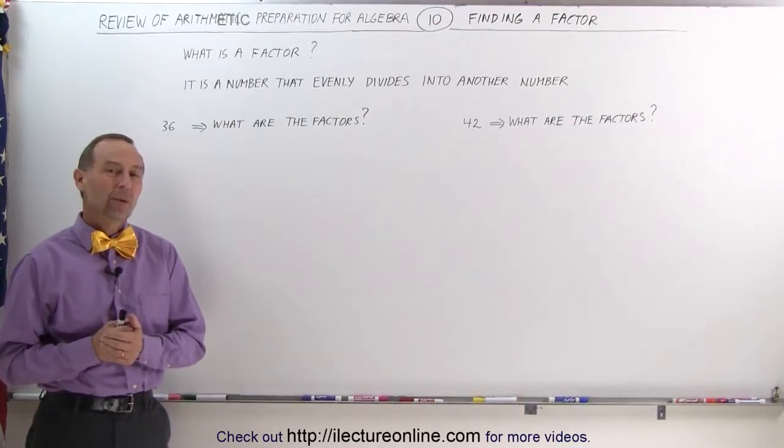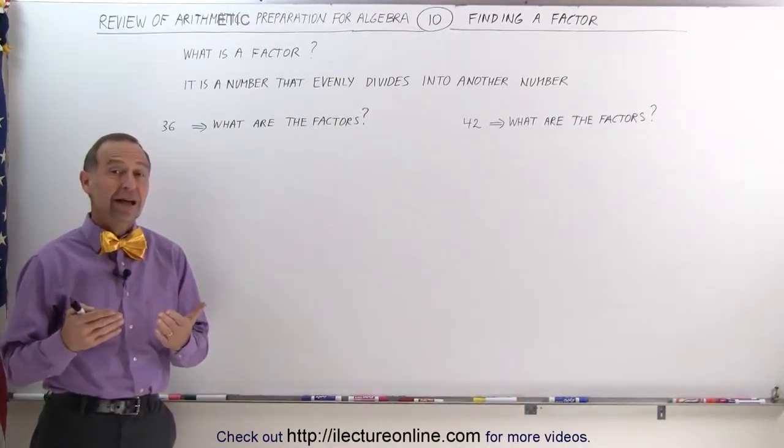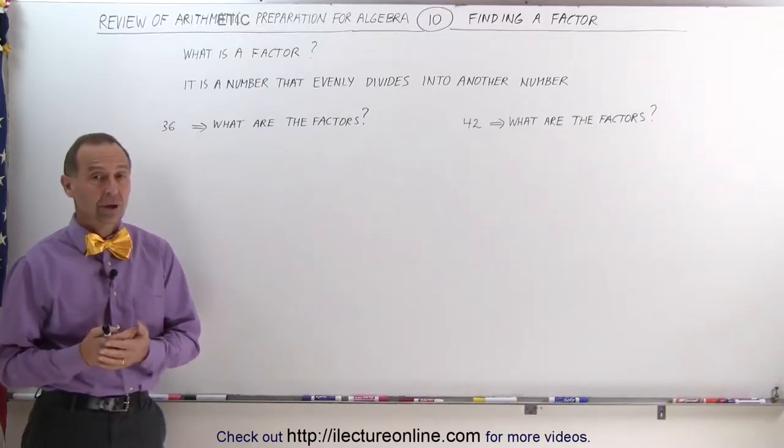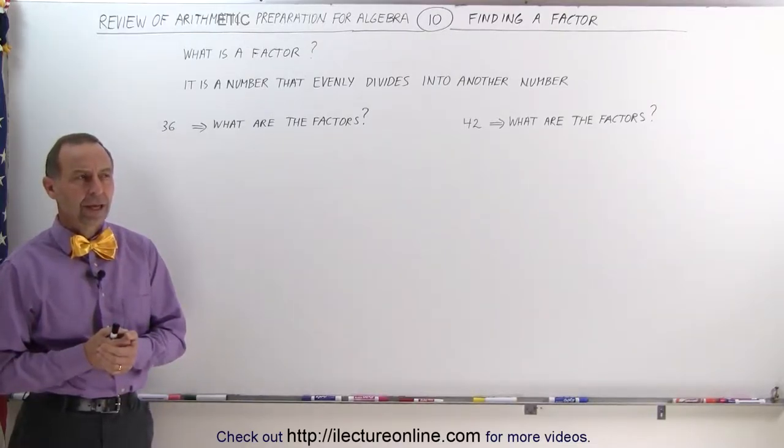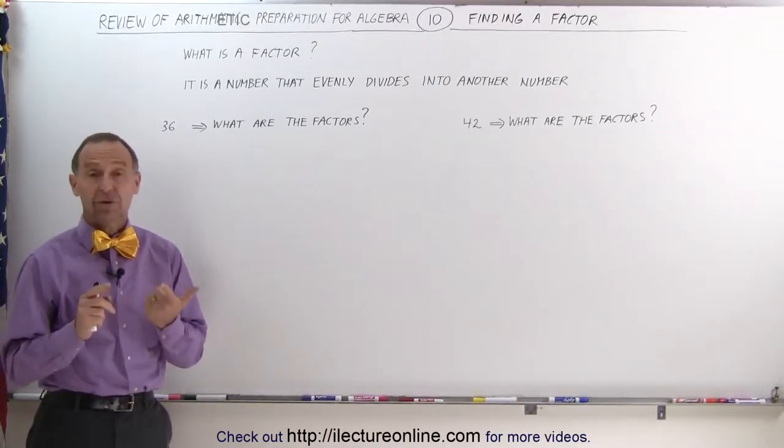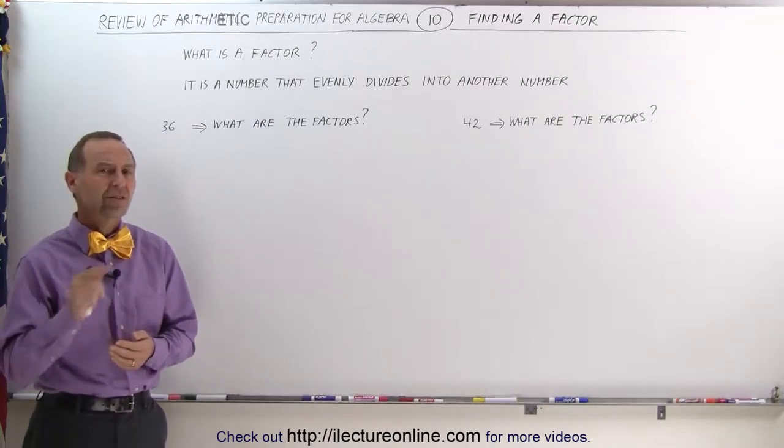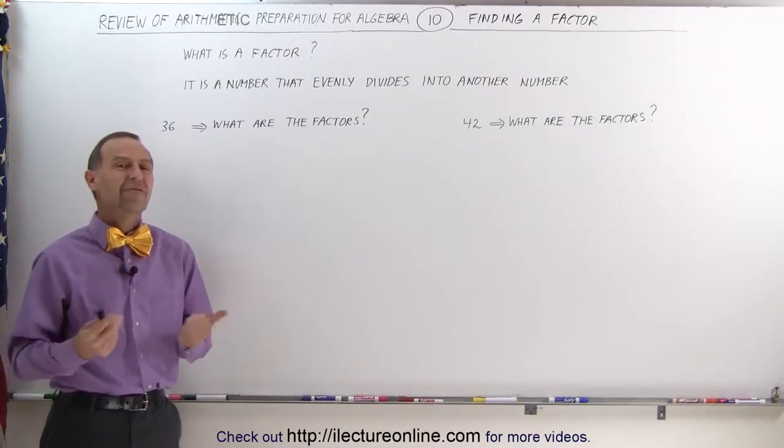Welcome to Electroline. We're going to find the greatest common factor of a couple of numbers. In order to do that, we have to understand what a factor is, what a common factor is, and then we can figure out what the greatest common factor is. So let's start with the question, what is a factor?